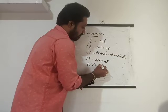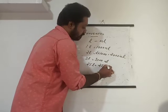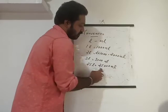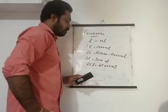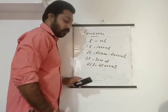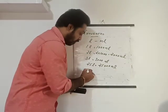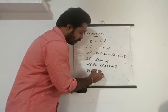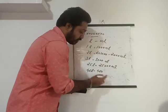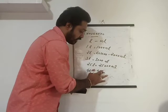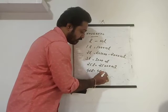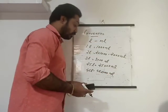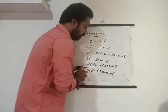What about twenty-five liters? Twenty-five into one thousand gives twenty-five thousand ml — just add three zeros. Similarly, forty-six liters: forty-six into one thousand equals forty-six thousand ml.